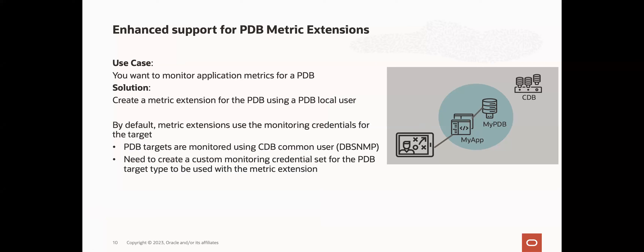You may also have scenarios where you need to monitor application metrics for a PDB, and the solution is to create a metric extension for the PDB using a PDB local user — a PDB user that has access to the application tables in the PDB. When creating a metric extension, by default it will use the monitoring credentials for the target. For PDB specifically, PDB targets are monitored using the CDB common user, for example DBSNMP. For metric extensions, if you want to use credentials other than the default monitoring credentials, you will have to create a new monitoring credential set for the target of the metric extension. For this PDB use case, you will first create a custom monitoring credential set for the PDB target type, set the PDB local user as a value for that credential set, and then you can use it in the metric extension.